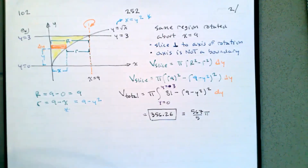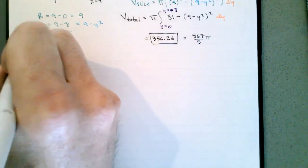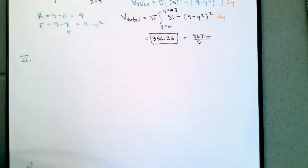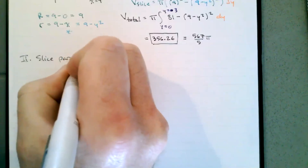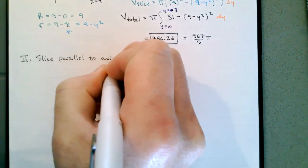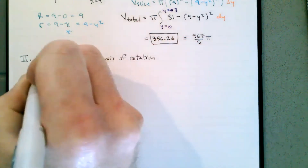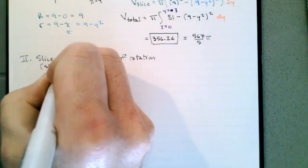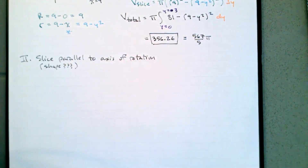That's super efficient. Tomorrow we'll look at strategy number two: what happens when we slice parallel to the axis of rotation, and we'll think about what shape that produces. That's going to do it for today — have a good day, and thanks for playing.